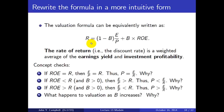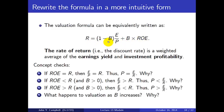We can rearrange that formula to write R equals (1 minus B) times the earnings-to-price ratio, plus B times ROE. The rate of return, or equivalently the discount rate, is a weighted average of two things: the earnings yield and investment profitability. The more the firm is reinvesting, the more important profitability is. If the firm isn't reinvesting, profitability doesn't matter because it's simply paying everything out.